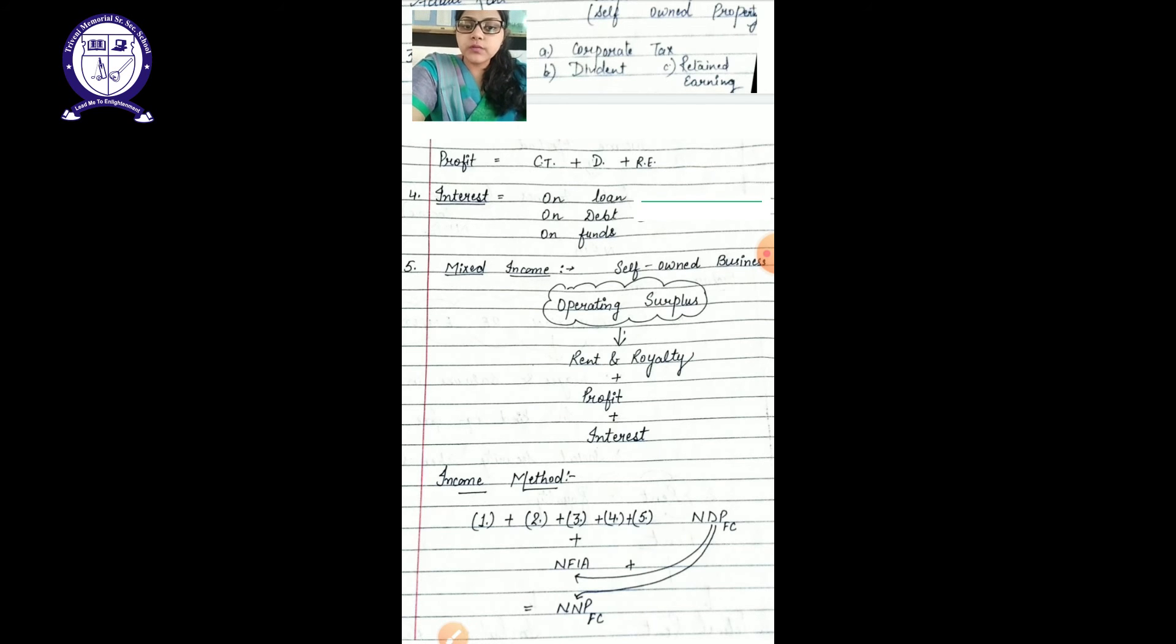Now we will end up with your income method. We have done five elements all together: first one is your compensation of employees, second one is your profit, third one is your interest, fourth is your mixed income, and fifth one is your rent and royalty. You can write it in any kind of sequence. The sequence does not matter.